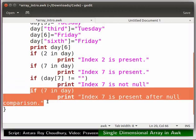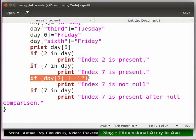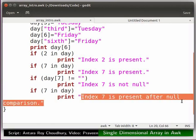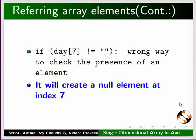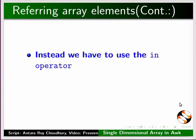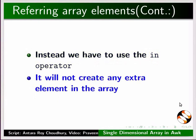This access itself will first create an element at index 7 and initialize it with the value null. Next, we are trying to check if any element is actually present at index 7. As a null element is already created, the output shows that index 7 is present after null comparison. So remember this: day at index 7 not equal to null is a wrong way to check the presence of an element. It will create a null element at index 7. Instead, we have to use the in operator. It will not create any extra element in the array.